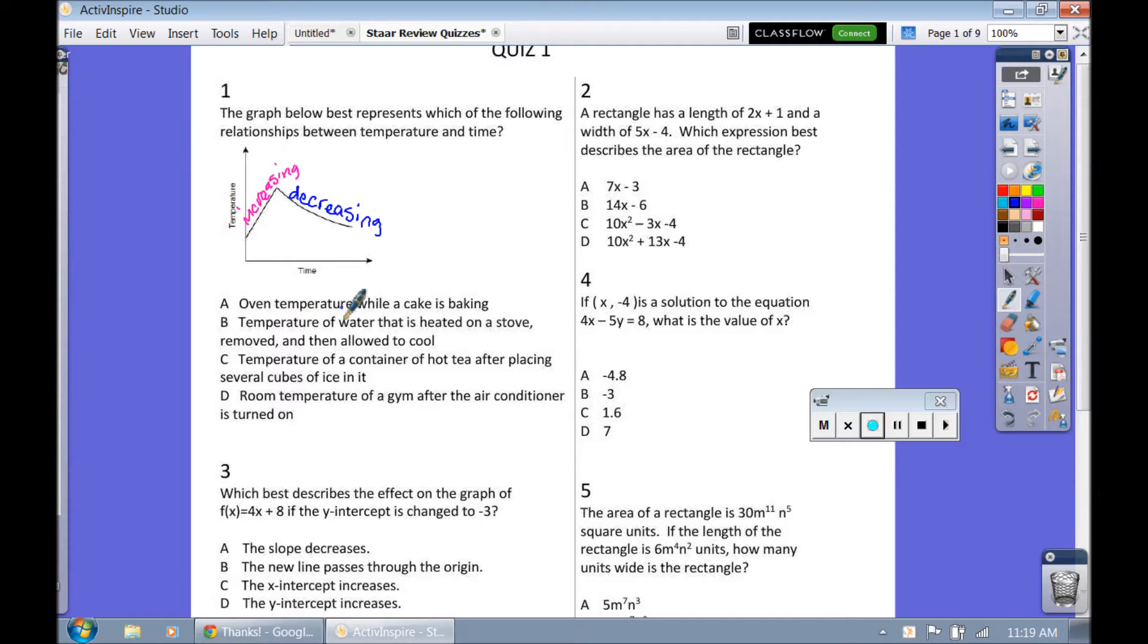Oven temperature while a cake is baking. Well, what if we left the temperature at 350? The temperature would stay the same all the way through the process until we turn it off at the end. But what about if the temperature of the water, of some water, is heated on the stove?